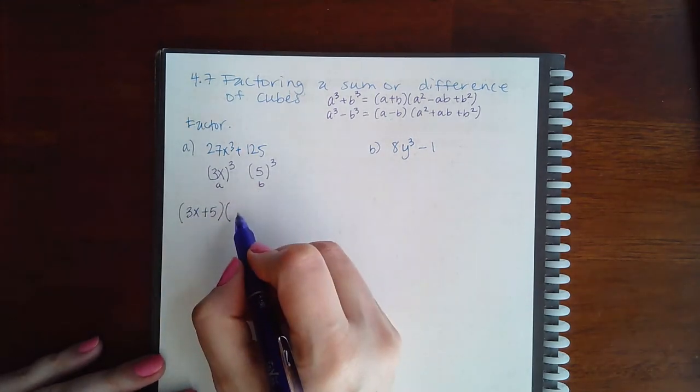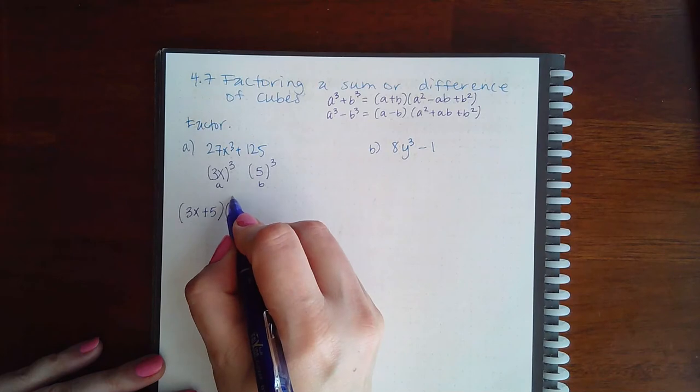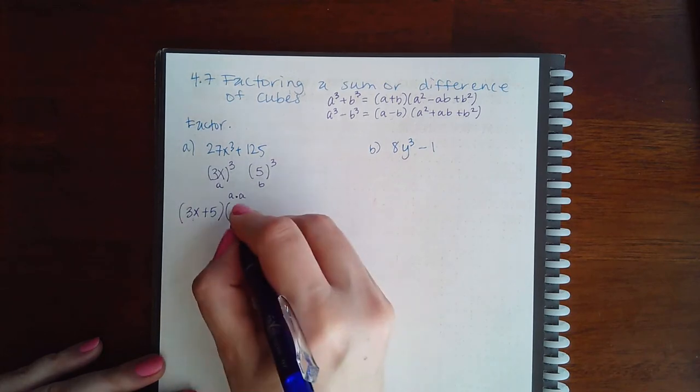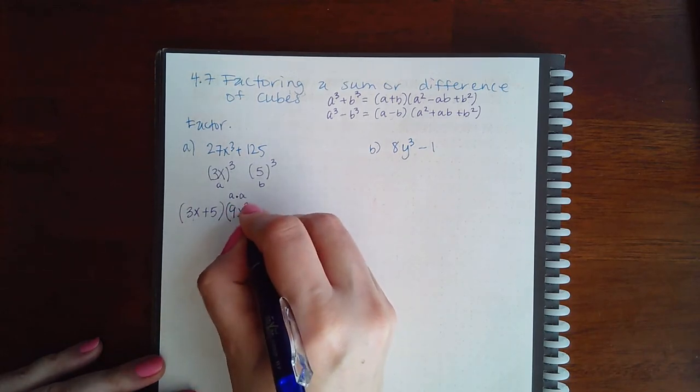And then a squared. A squared is the same as saying a times a. So what do I get if I do 3x times 3x? That's the same as saying 9x squared.